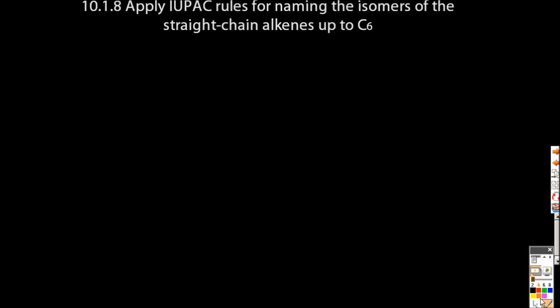All right then, how to name alkenes. Only up to six carbons though, and only linear ones. All right, let's look at butene, C4H8.